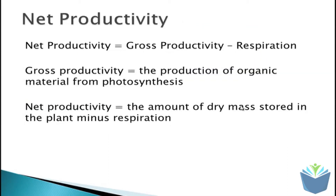What farmers are aiming to do is improve their net productivity. By applying things like fertilizers, they want to increase the amount of yield they can produce. This leads us to this equation: net productivity equals gross productivity minus the rate of respiration. The gross productivity is the production of organic material from photosynthesis. The net productivity is the amount of dry mass stored in the plant minus the rate of respiration.